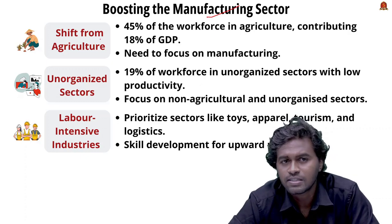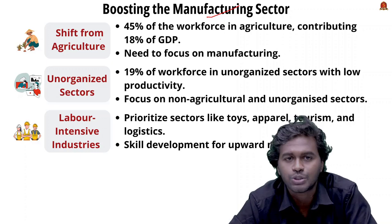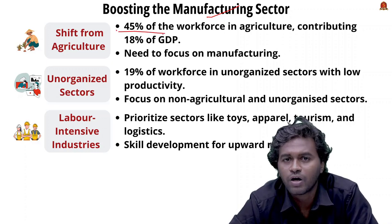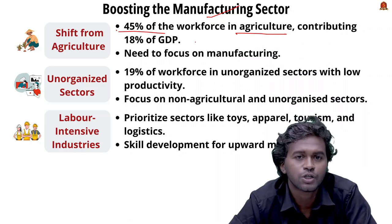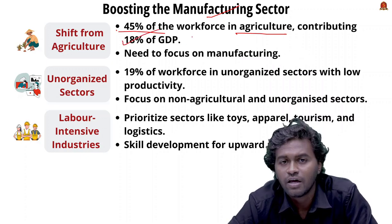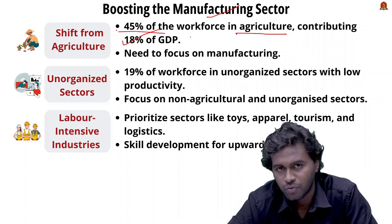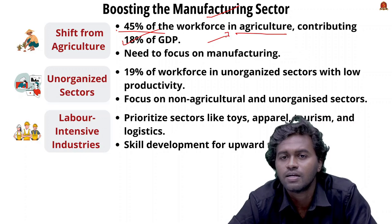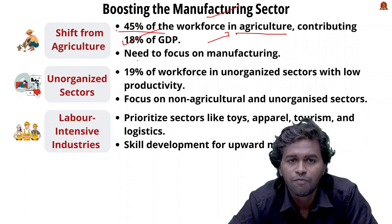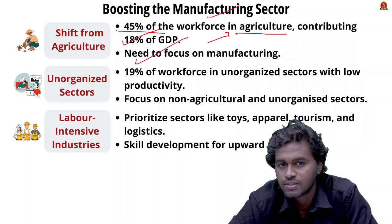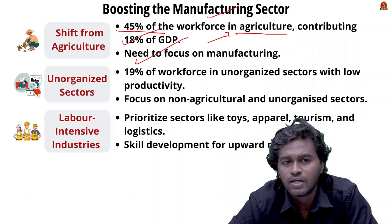The reason behind jobless growth is the sudden shift from agriculture to the tertiary sector. Still, 45% of the workforce is employed in agriculture, but agriculture contributes only 18% to the GDP. The output is not proportional to the employed workforce, which can lead to disguised unemployment — employing more people in one sector than needed.